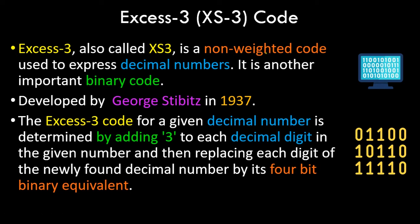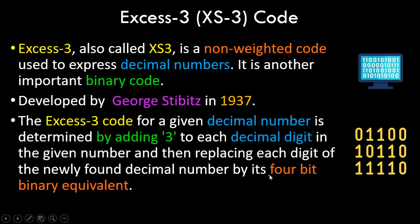This is a non-weighted code, meaning the binary value is not weighted. In BCD code, it is a weighted code where we assign positional weights — known as 8421 — assigning 2 raised to 0, 2 raised to 1, 2 raised to 2, and so on from LSB to MSB. In XS3, no weights are assigned. It was developed by George Stibitz in 1937. The XS3 code for a given decimal is determined by adding 3 to each decimal digit and then representing the result by its 4-bit binary equivalent.